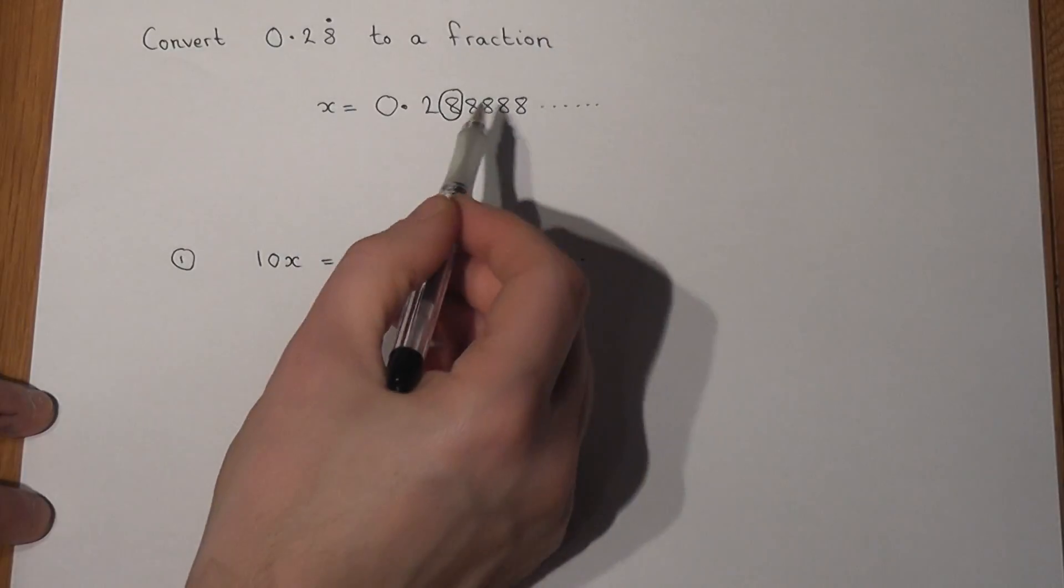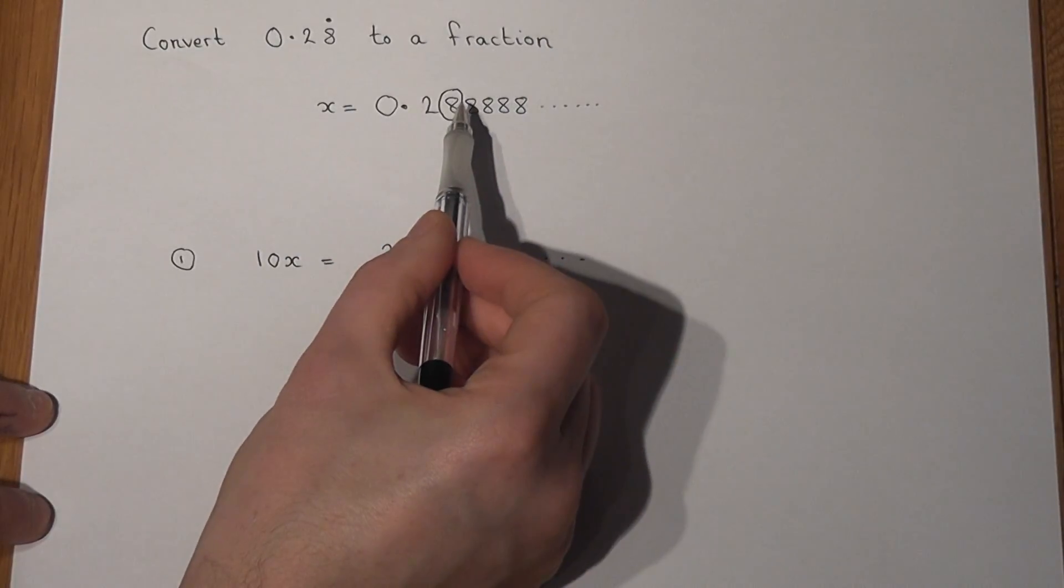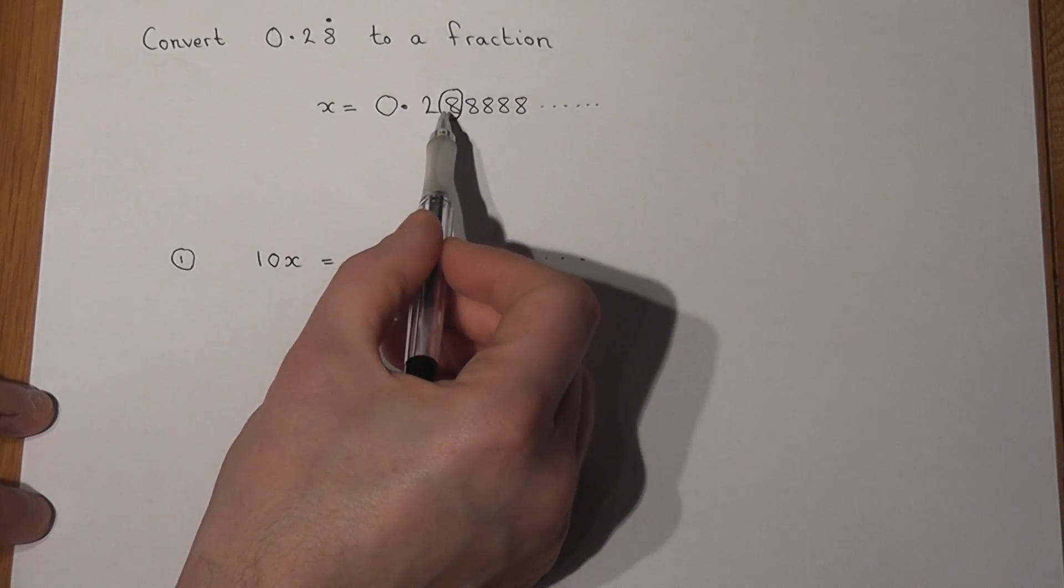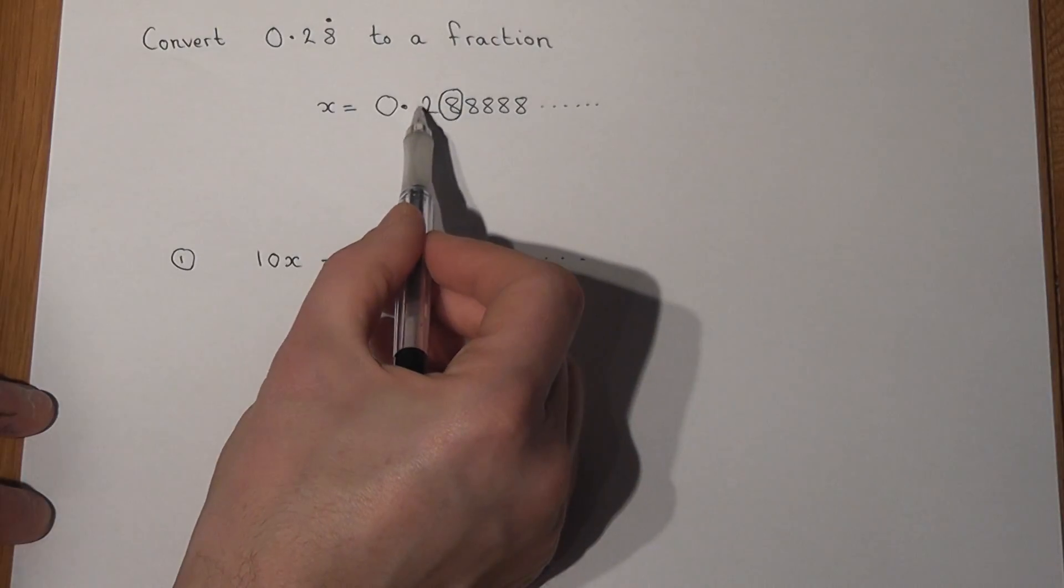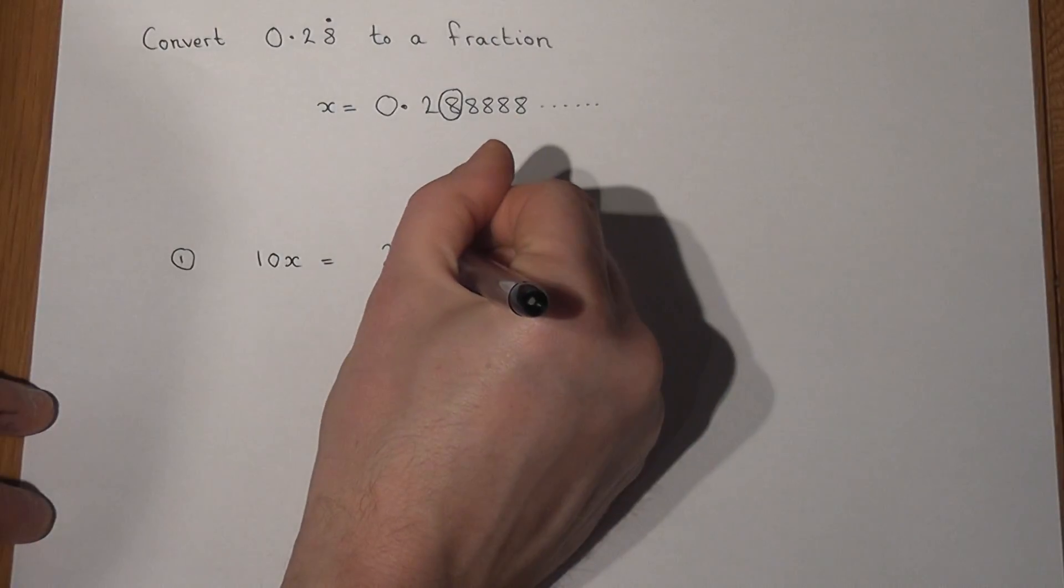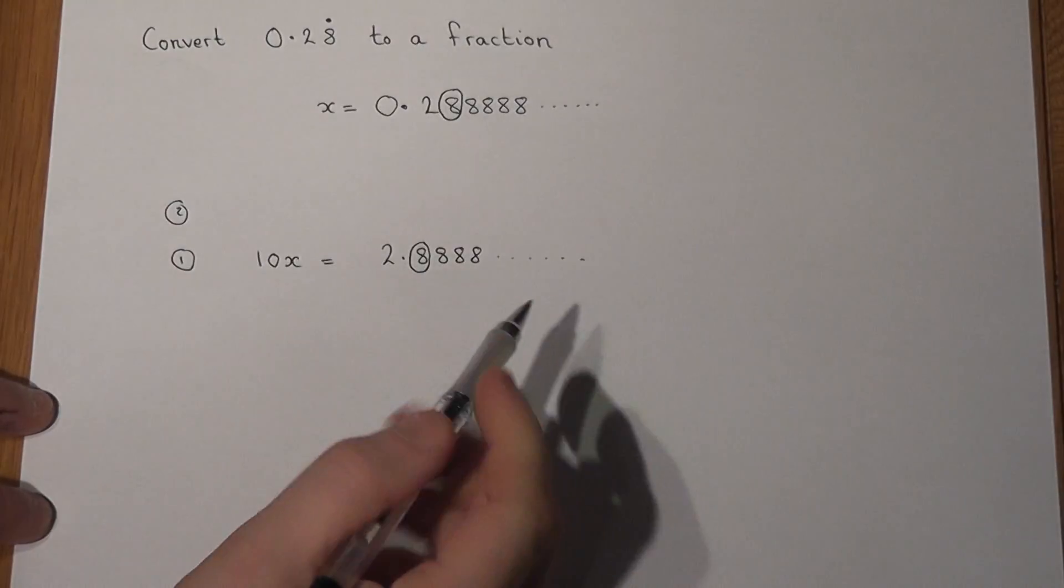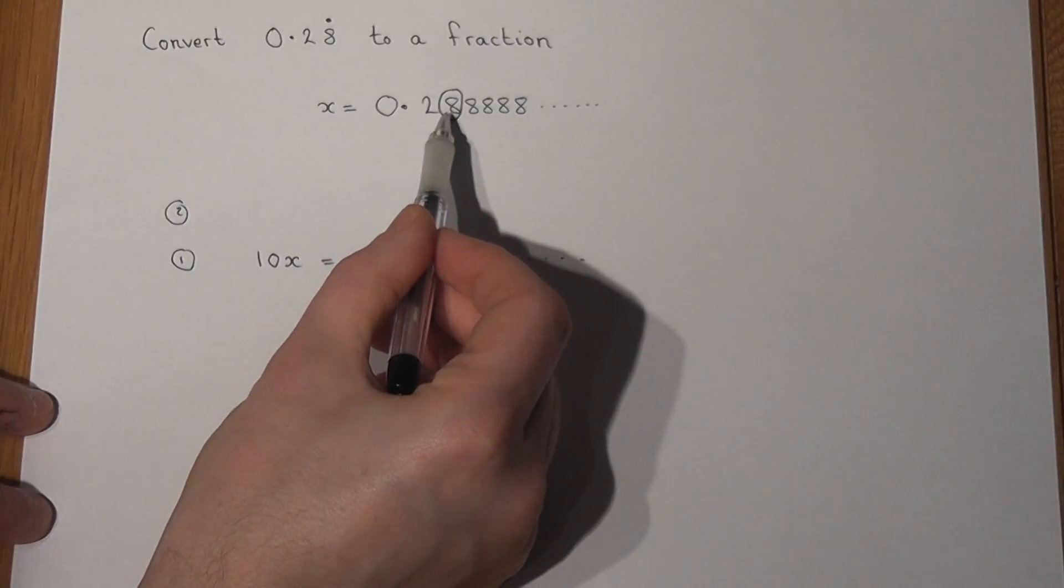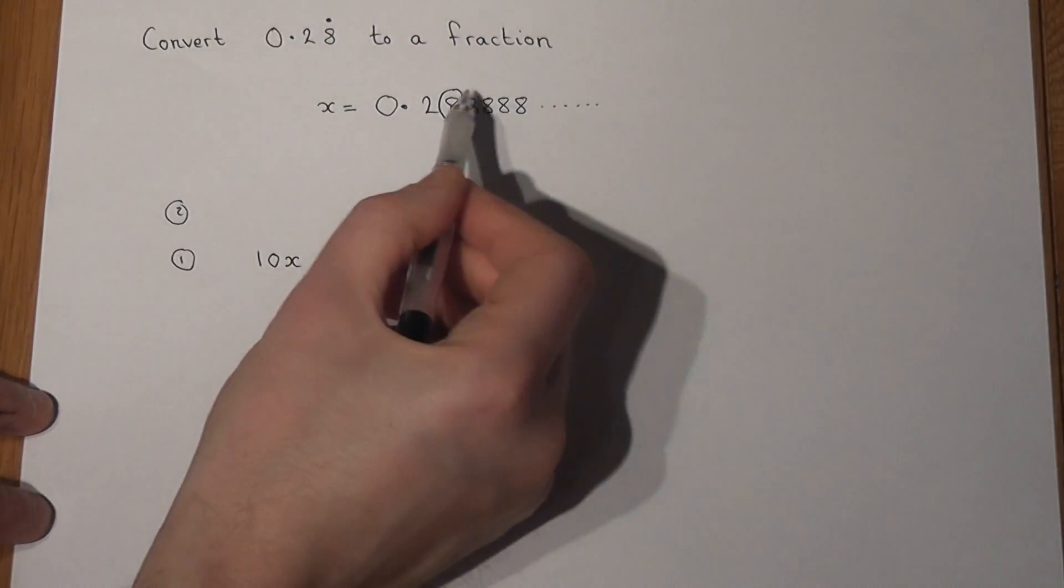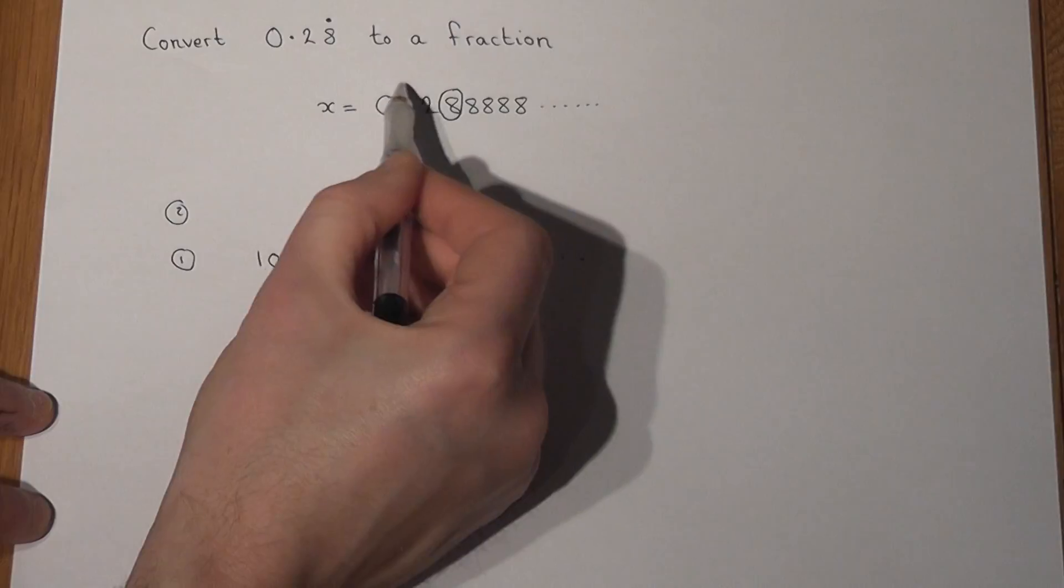So again, I circled the recurring part and times by enough tens to get that just to the right of the decimal point. And there it is. Above that, I then times by enough tens to get it beyond the point. So not just one place, but two places.